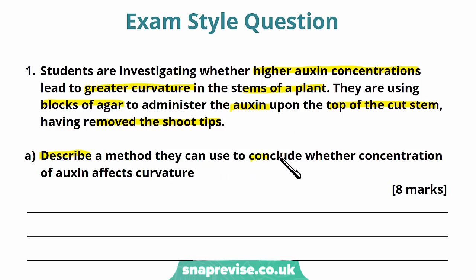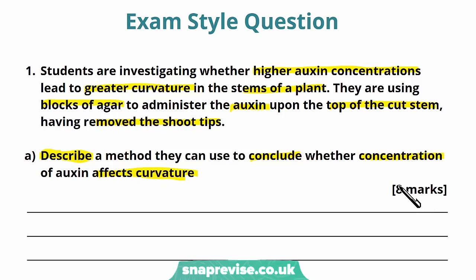Part A says describe a method they can use to conclude whether concentration of auxin affects curvature. This is a describe question, so with method questions a lot of the time it's a step by step process. It's always a good idea to see how many marks you're looking at. It can seem daunting to think you have to say 8, 9, or 10 things, but if you just think of it in a logical order — what would you do, what would you do next, and how would you finish it — you can cover the points by thinking it through from beginning to end.